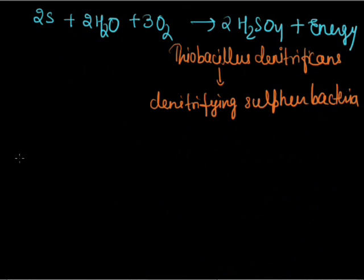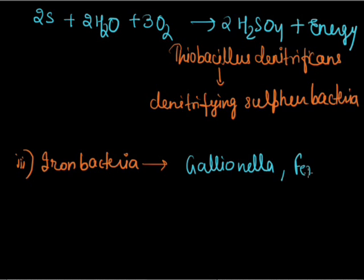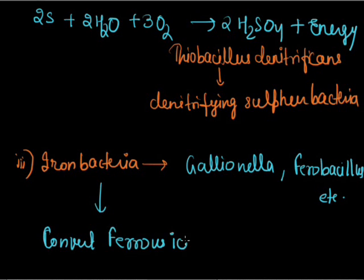There are also iron bacteria. They convert ferrous iron to ferric iron. Examples include Gallionella species and Ferrobacillus. Their function is to convert ferrous ions to ferric iron.